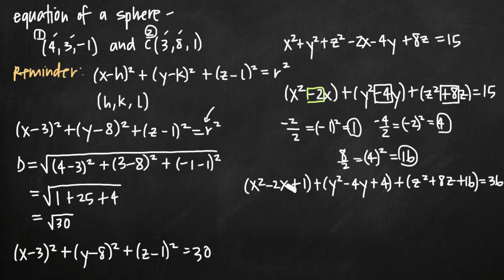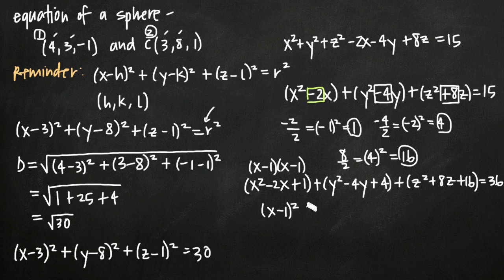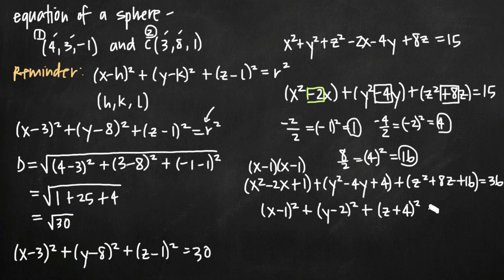Now we factor the left-hand side into perfect squares. x squared minus 2x plus 1 factors as quantity x minus 1 squared. y squared minus 4y plus 4 factors as quantity y minus 2 squared. z squared plus 8z plus 16 factors as quantity z plus 4 squared. That's what completing the square allows us to do — it gives us these perfect squares for x, y, and z, with 36 on the right-hand side.